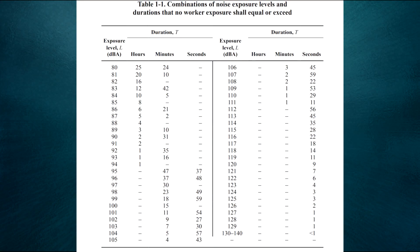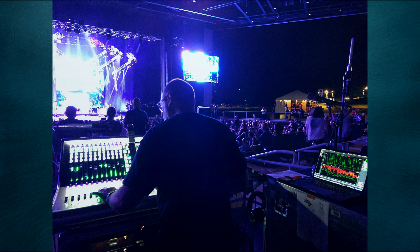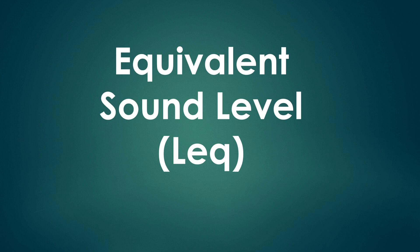Most noise exposure limits are specified as single numbers, which makes sense when dealing with relatively steady-state noise sources like industrial machinery. But what about a concert? Live music can be pretty dynamic, so when we want to get a better idea of average level over time, we can use a metric called equivalent sound level, or LEQ for short. It measures the SPL over a specified amount of time and averages to a single number decibel equivalent.